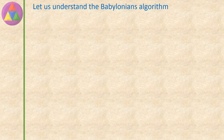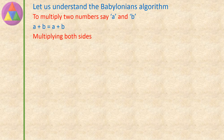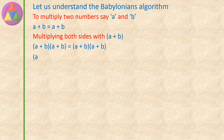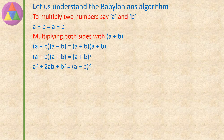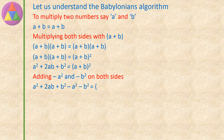Let us understand the Babylonian's Algorithm. To multiply two numbers A and B: A plus B equals A plus B. Multiplying both sides with A plus B: A plus B into A plus B equals A plus B whole square. Expanding: A plus B into A plus B equals A square plus 2AB plus B square equals A plus B whole square. Adding minus A square and minus B square on both sides: A square plus 2AB plus B square, minus A square, minus B square equals A plus B whole square, minus A square, minus B square. The plus A square and minus A square, and plus B square and minus B square cancel each other.